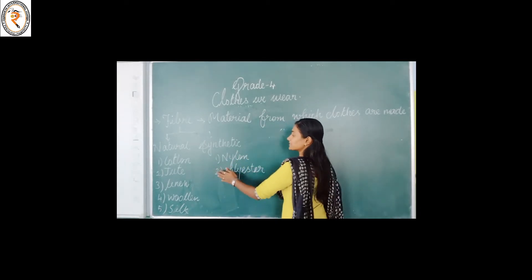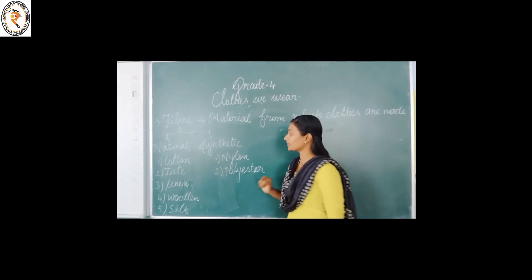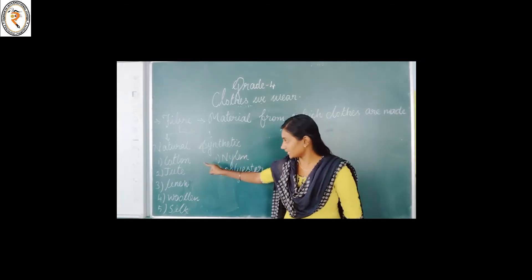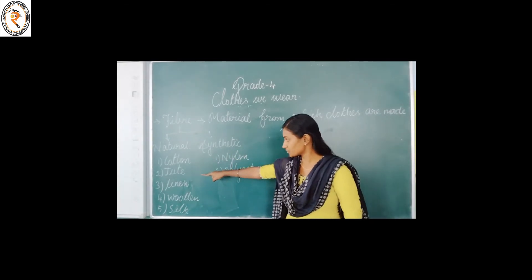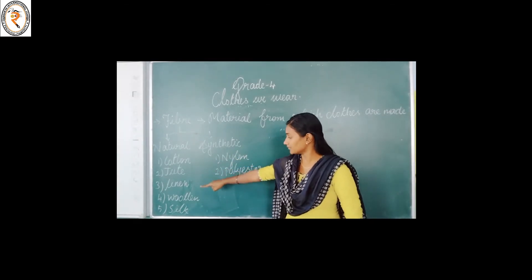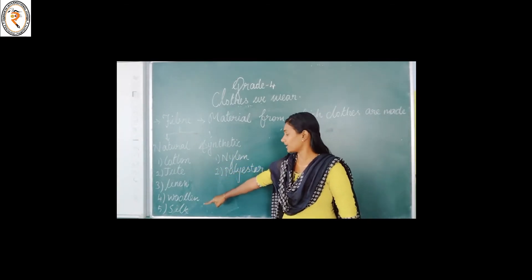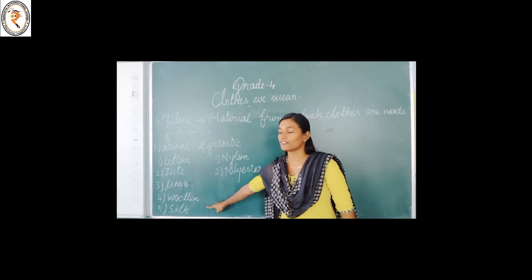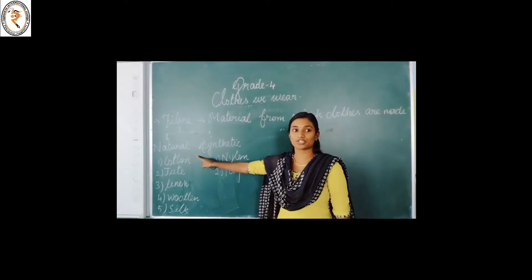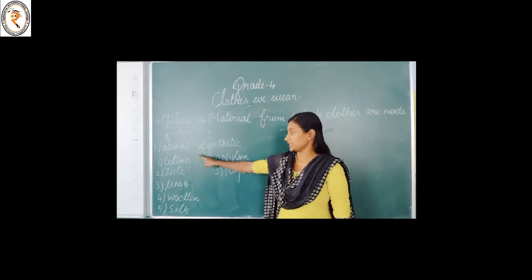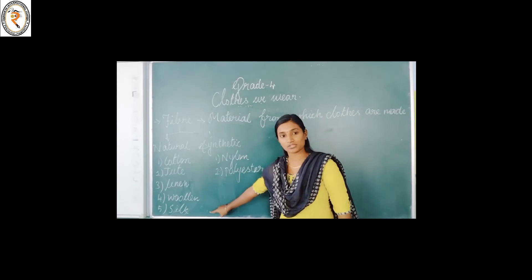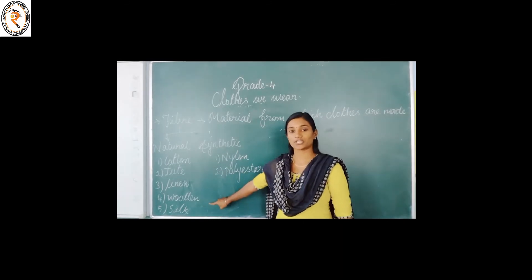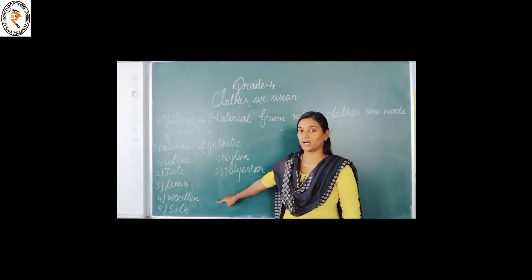The examples of natural fiber are cotton, jute, linen, wool, and silk. These are all the examples of natural fiber.